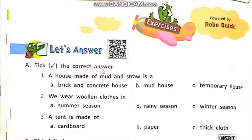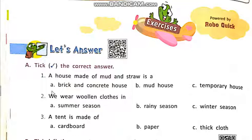A. Take the correct answer. Number 1: A house made of mud and straw. Which house is made of mud and straw?